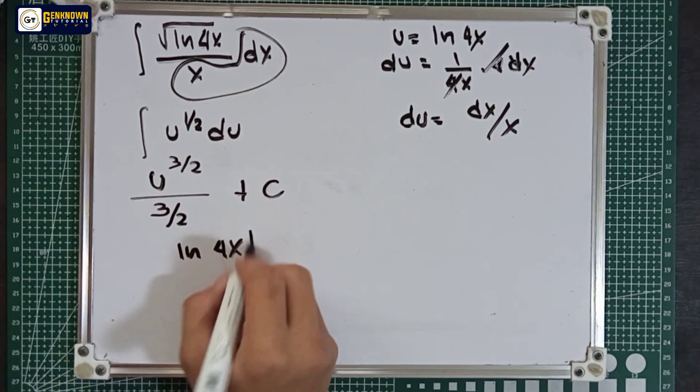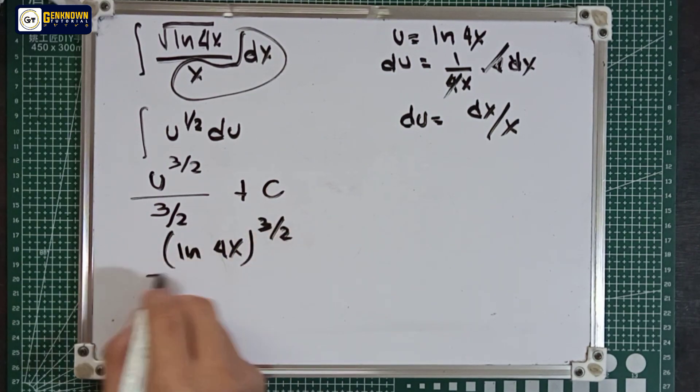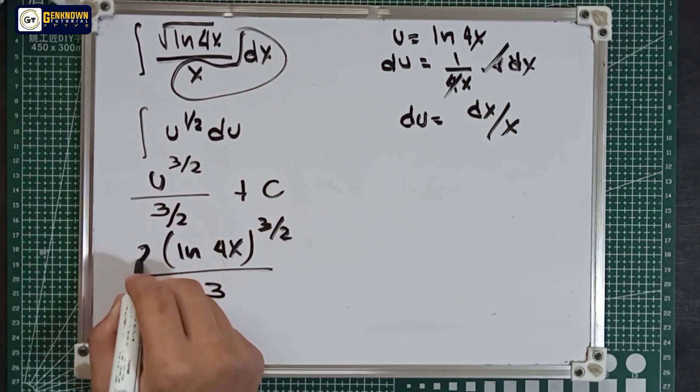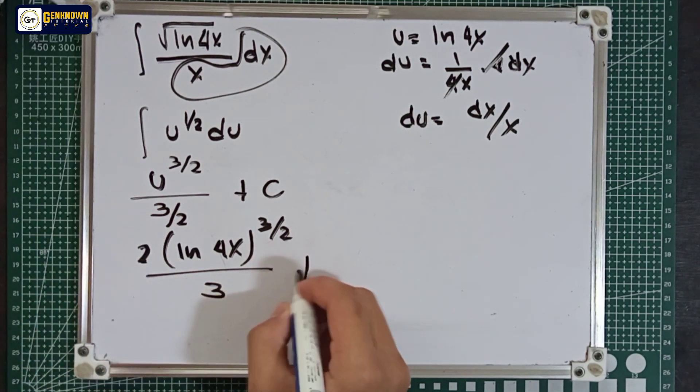So ln 4x raised to 3 over 2, over 3, plus the constant.